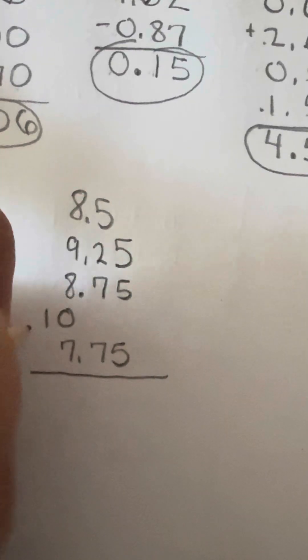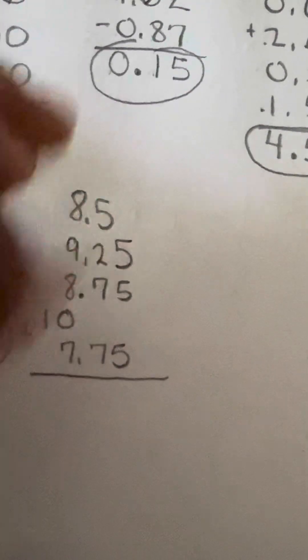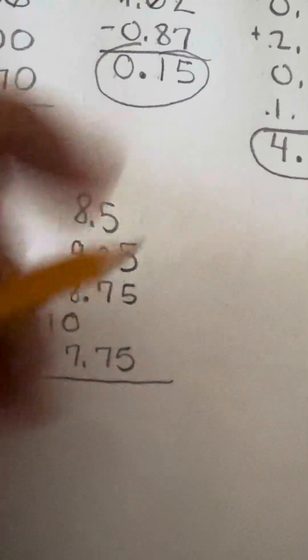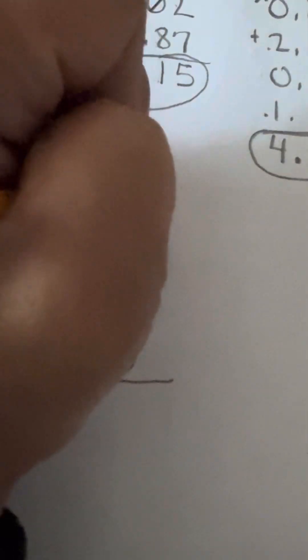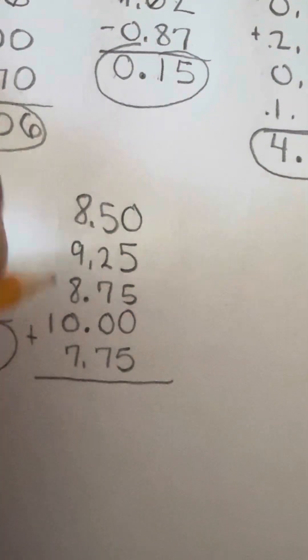So again, I have everything lined up. We're adding all these together. Anything that you see that's not got anything in it, we're going to actually throw a zero in so that we keep those placeholders consistent. And then we're going to add together.